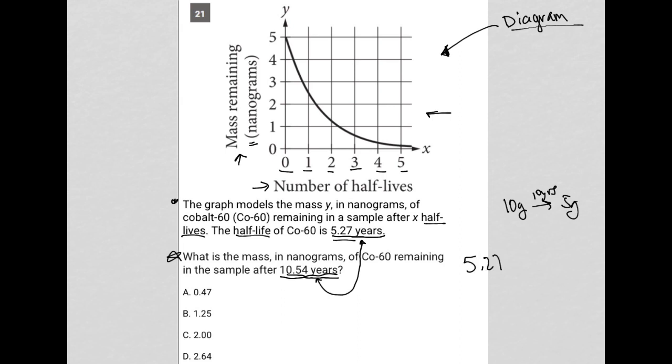5.27 times 2 is equal to 10.54. Now, why is that useful for me? That's useful because if 5.27 years represents one half-life, then multiplying it by 2 represents two half-lives.